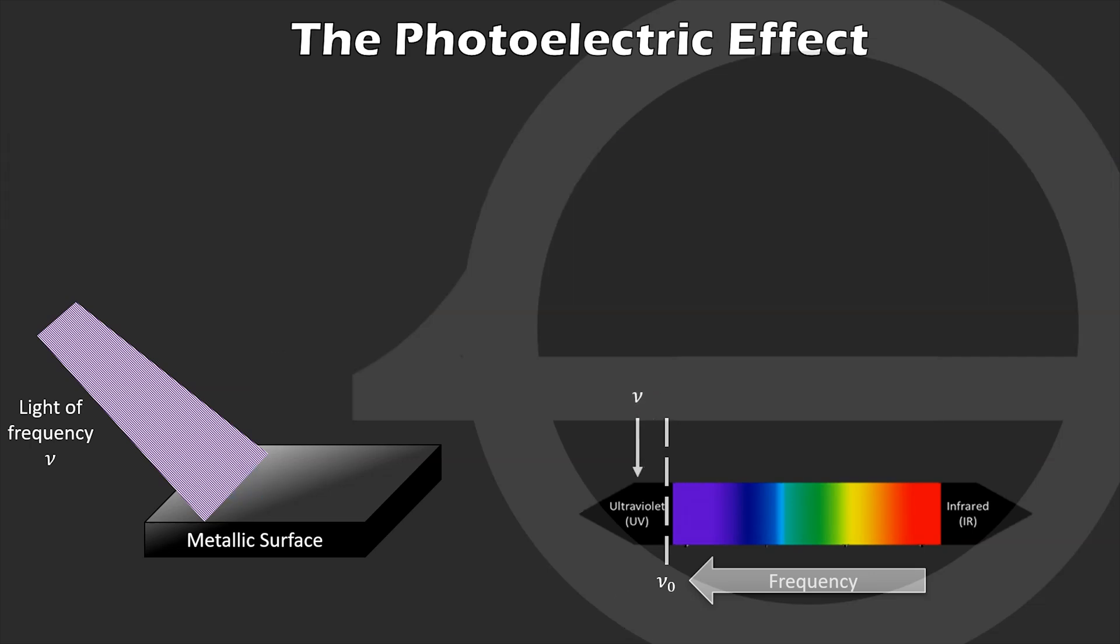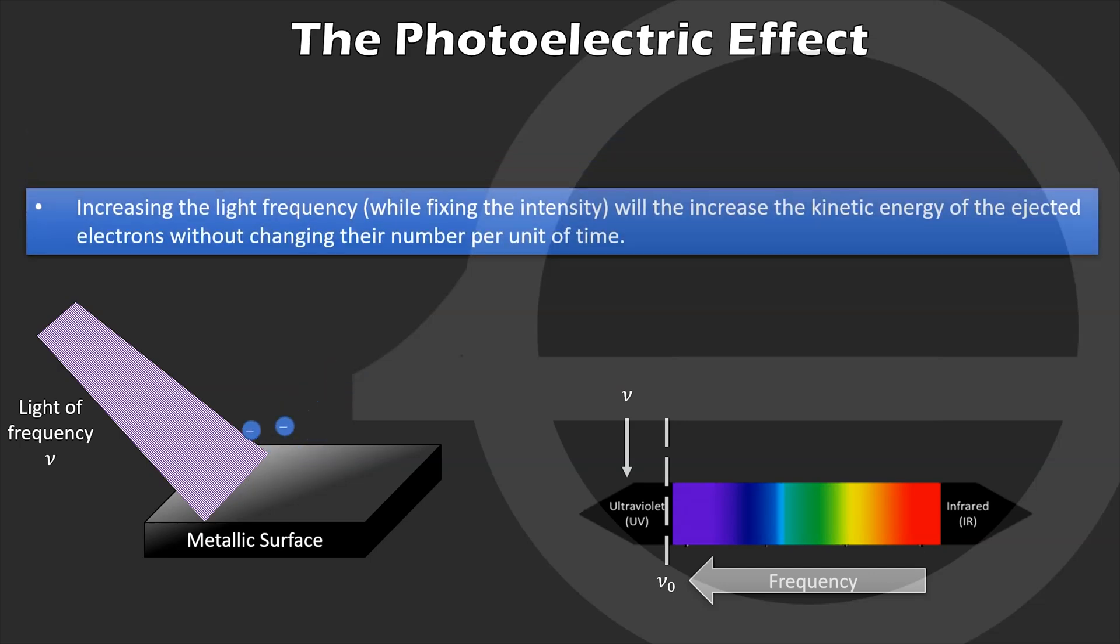On the other hand, keeping the same light intensity but increasing the frequency further above nu-naught, we observe that the emission rate is the same as previous, which is expected since the intensity wasn't changed. However, this time, electrons are emitted with some kinetic energy. As a result, we see that the light frequency has a direct effect on the electron's energy.